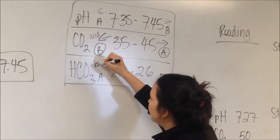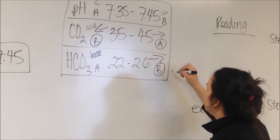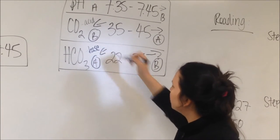HCO3 is a base. So again, if you have more, you're going to be alkaline or more basic. And if you have below, you're going to be more acid.